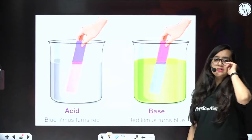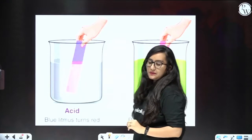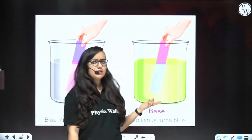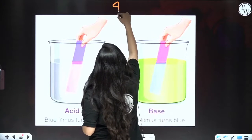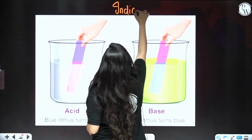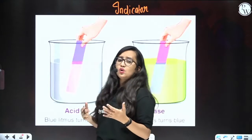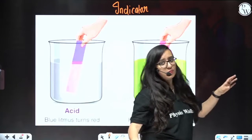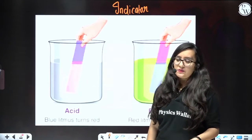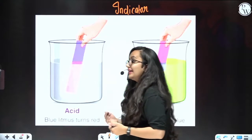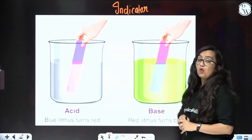This is the litmus test. In one beaker I have taken acid and in one beaker I have taken base. There is a litmus paper — it is available easily in the medical shop. It is called an indicator. Indicator is that substance which indicates whether it is an acid or a base. It denotes us by colour change or smell change. If you talk about olfactory indicators, those indicators just work on the basis of smell and tell us whether it is acid or base. Right now we are talking about litmus paper.